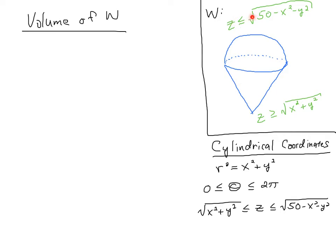And then z will be less than the square root of 50 minus x squared minus y squared. If you square both sides, you find out that that is a sphere of radius square root of 50, on the top of the ice cream cone.